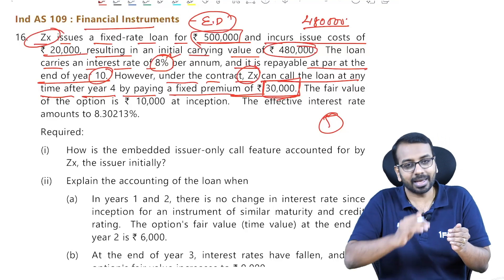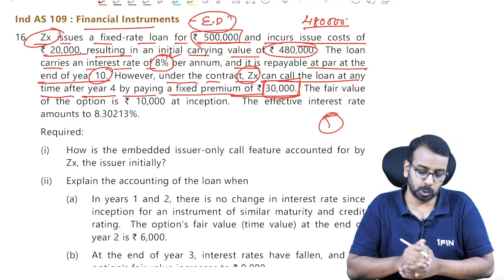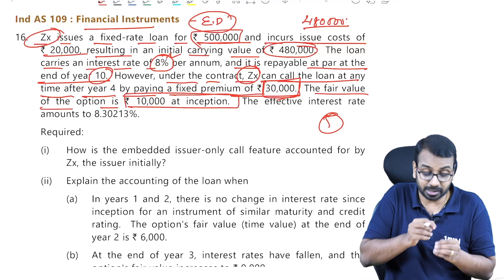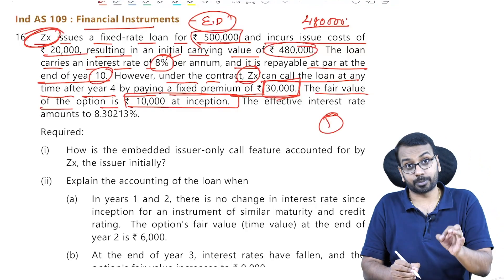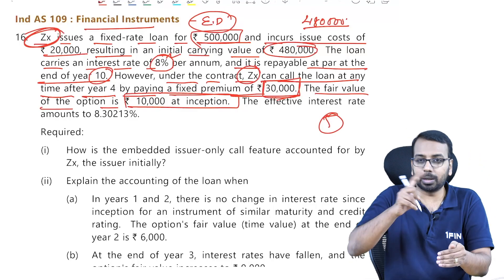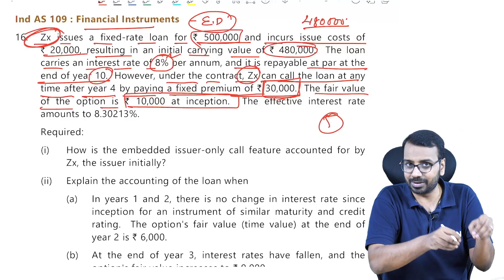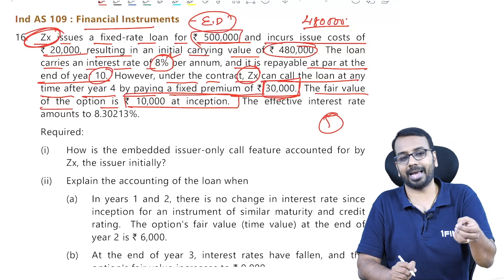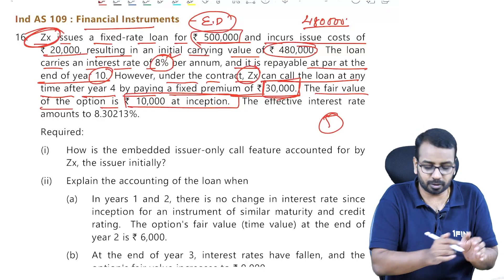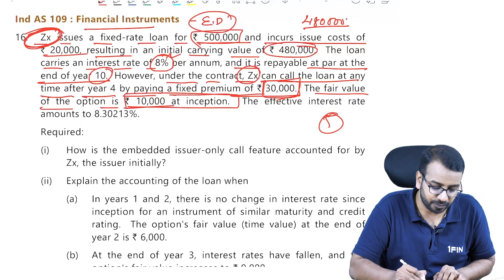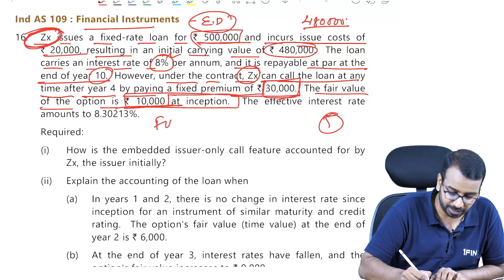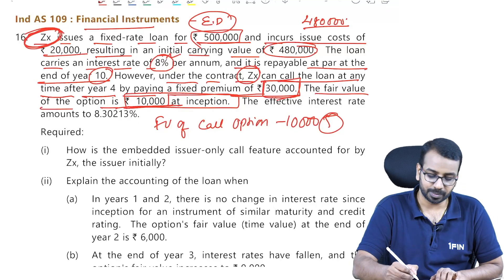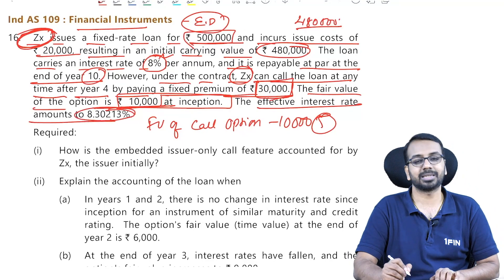The fair value of the option is 10,000 at inception. Always remember: whenever there is an option, ZX has the option — the option to prepay the loan. If they have the option, the other party has an obligation. ZX is the holder of the option, and the fair value of the call option at inception is 10,000. The effective interest rate amounts to 8.30213%.